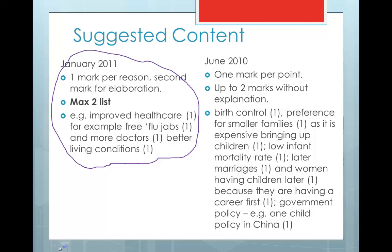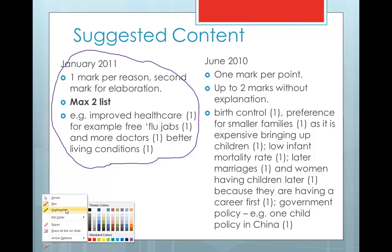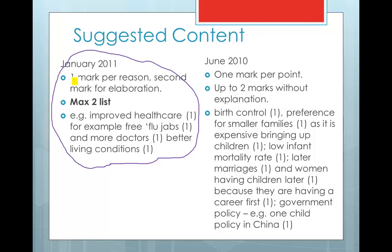There's something very important on this mark scheme though, and that comes from this section here. One mark per reason but you get a second mark for elaborating on your points. So it's no good just saying improved healthcare. You need to say improved healthcare due to free flu jabs for instance in the UK. That's then elaborating on your point. Similar thing here: up to two marks without the explanation. Clearly this is very important and you need to be doing it.